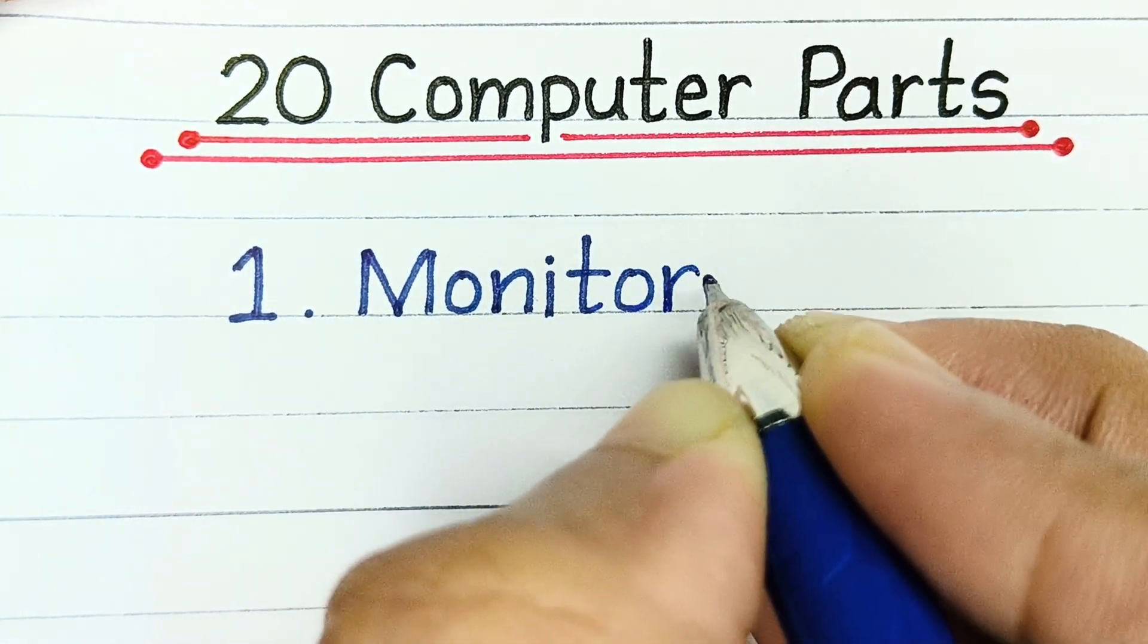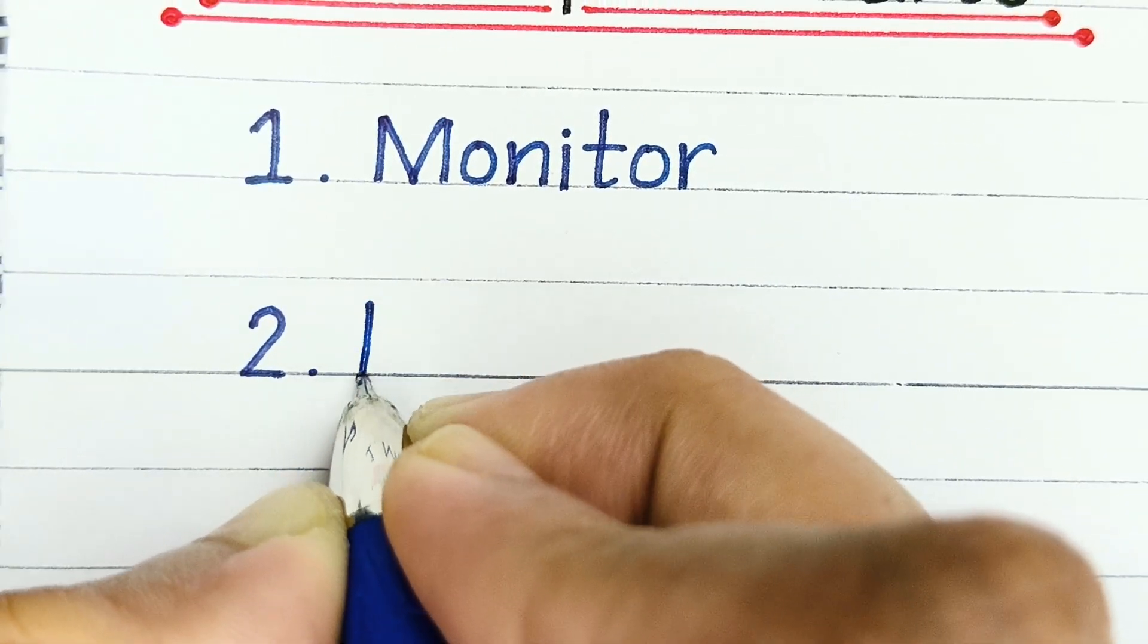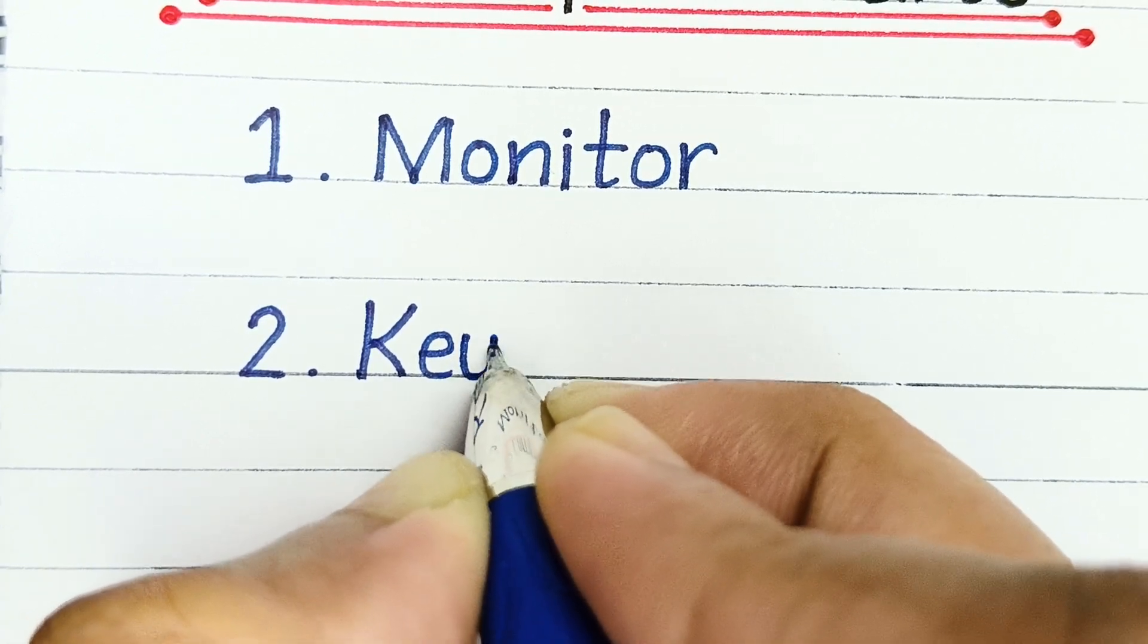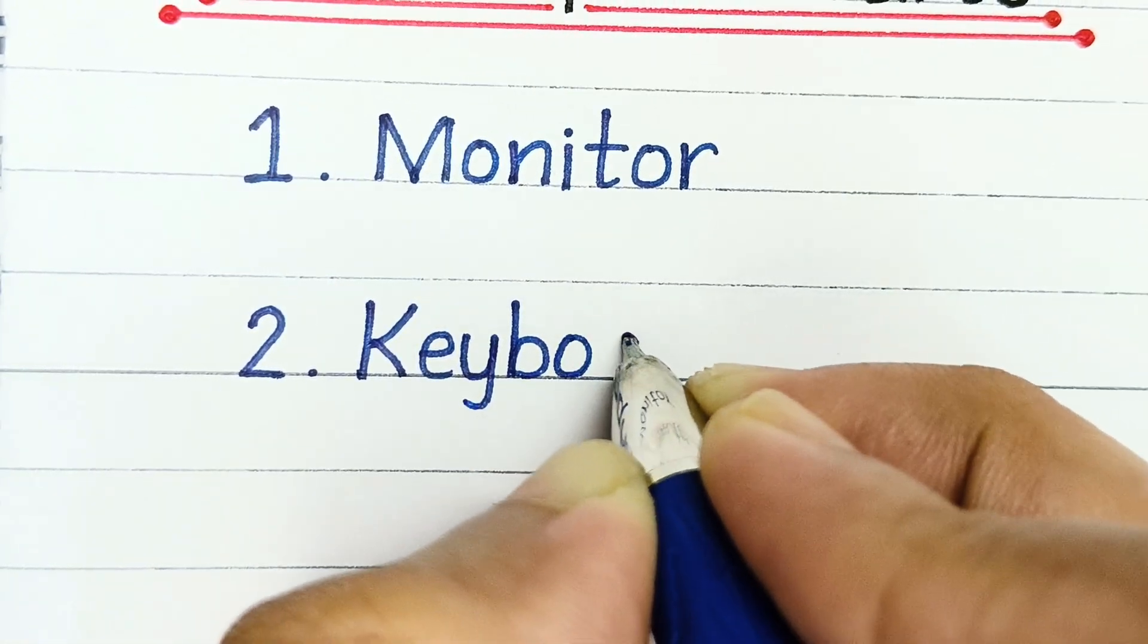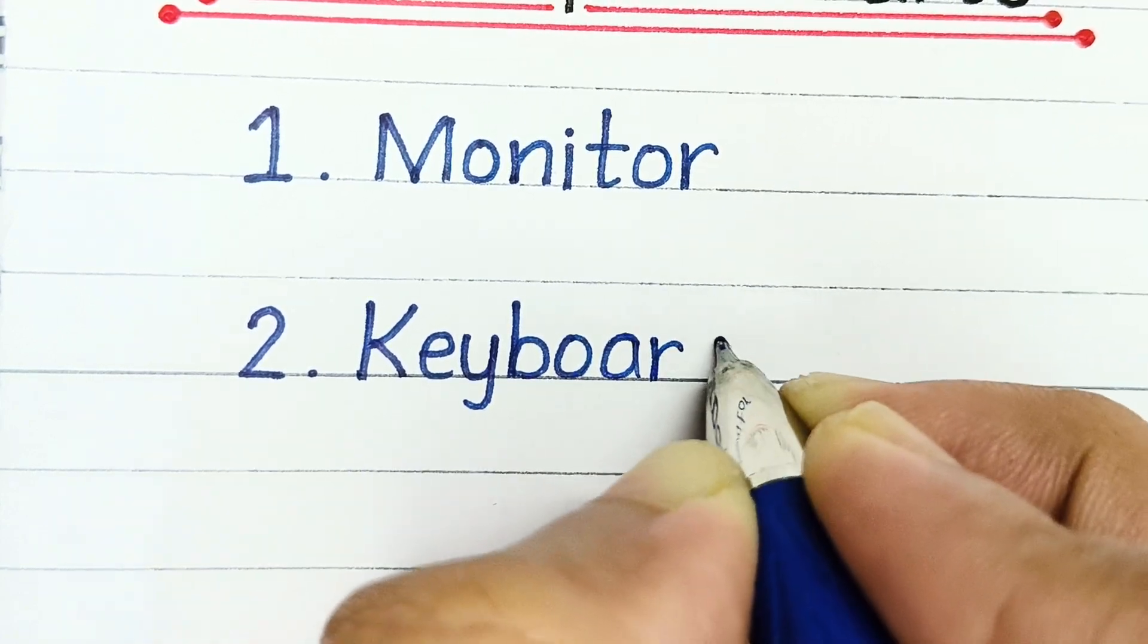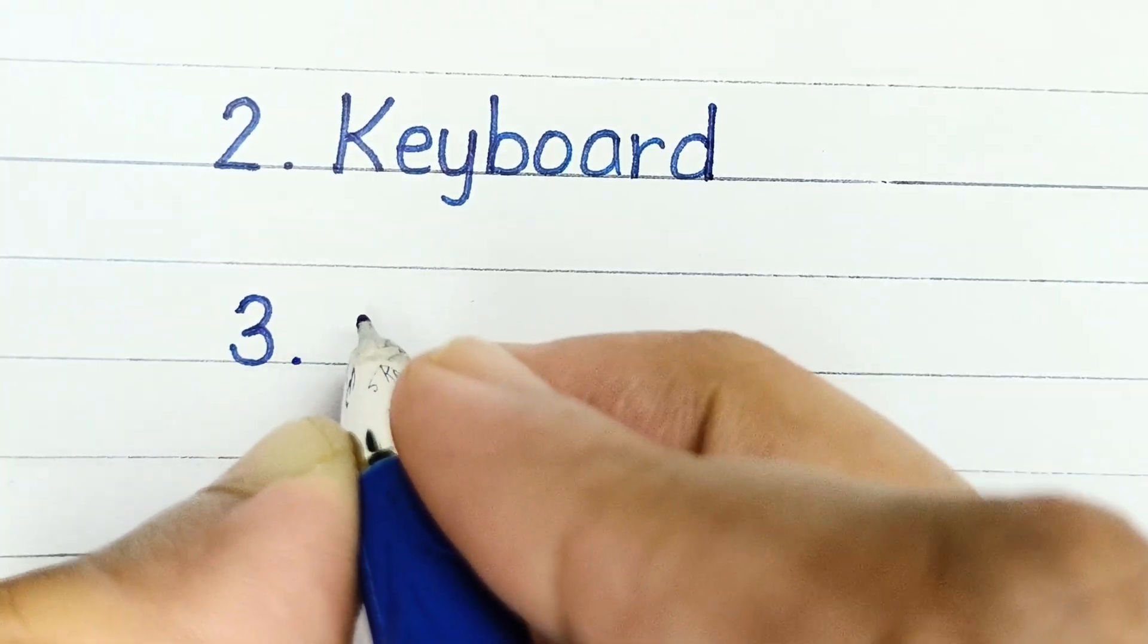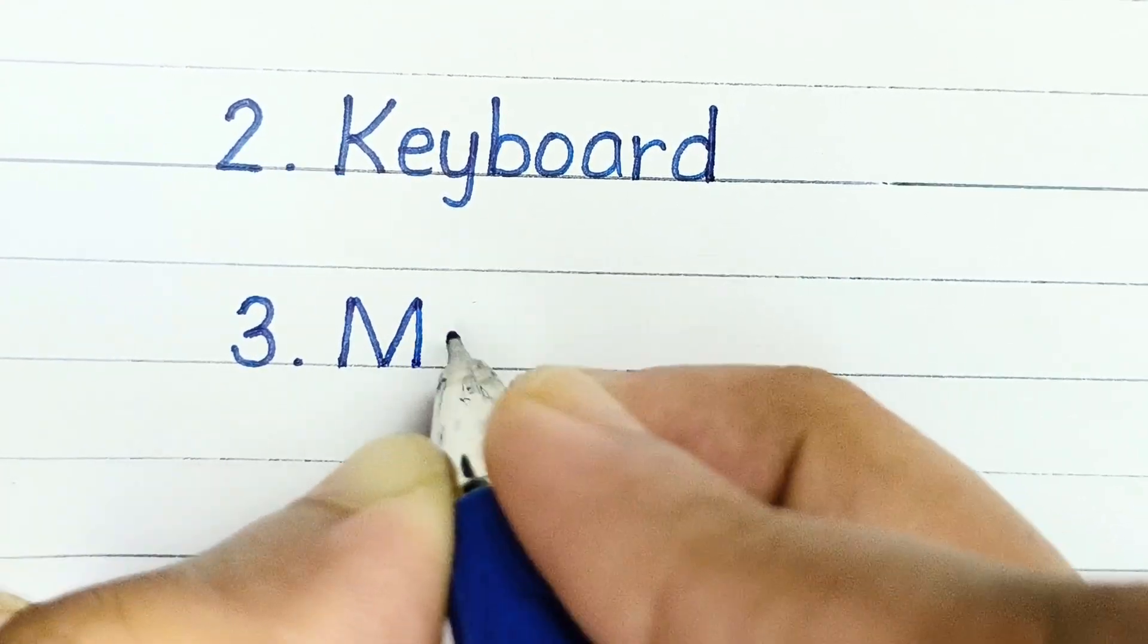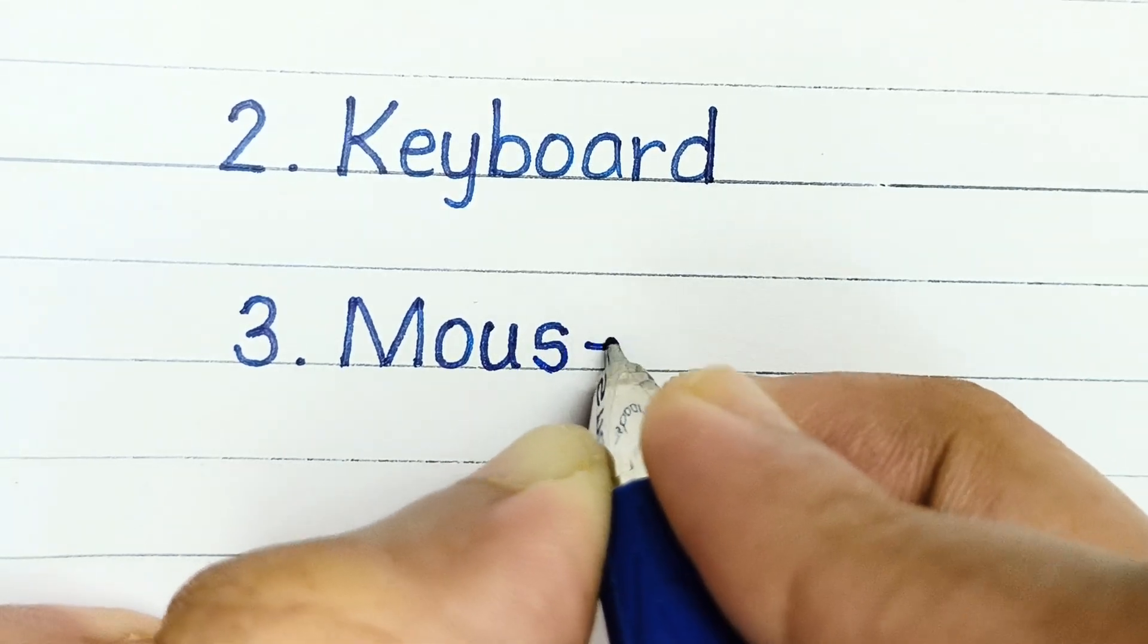Number one: monitor. Number two: keyboard. Number three: mouse.